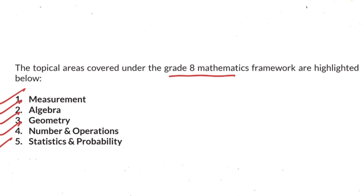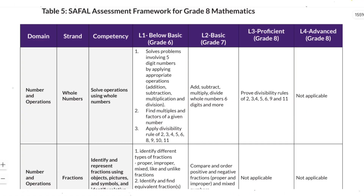From Number and Operations, the first subtopic is whole numbers. The competency assessed is solving operations using whole numbers. Important questions include: solve problems involving five-digit numbers using addition, subtraction, multiplication, and division; find multiples and factors of given numbers; apply divisibility rules; and add, subtract, multiply, and divide whole numbers with six or more digits. You should also be able to prove divisibility rules.